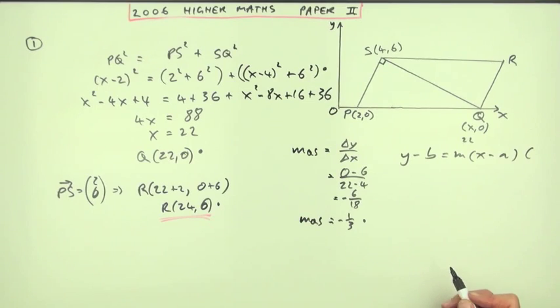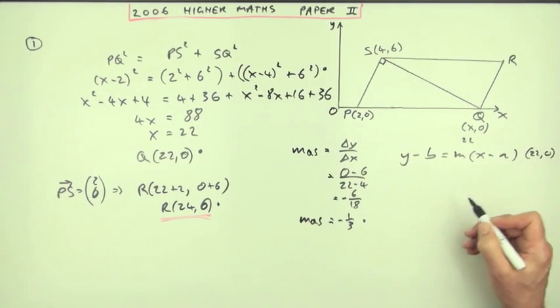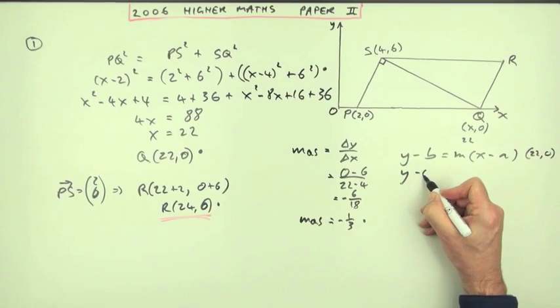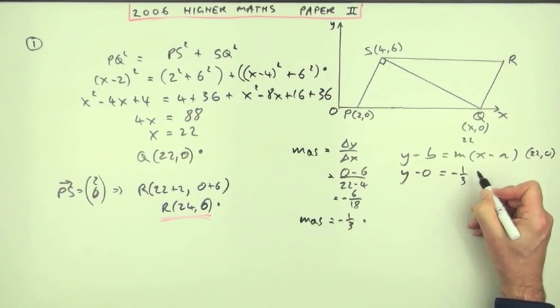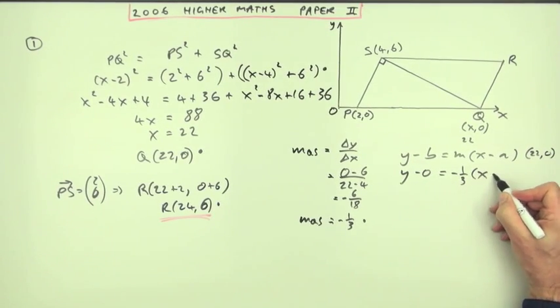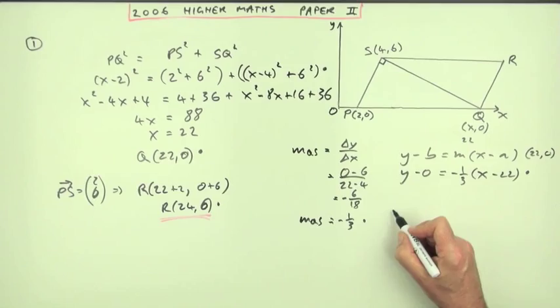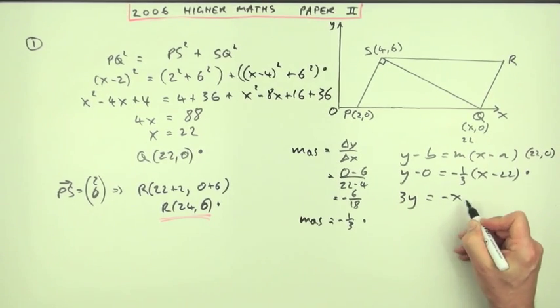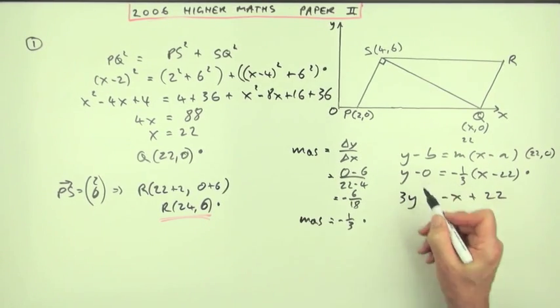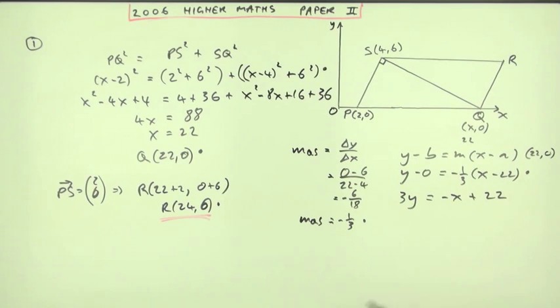Y minus 0 is negative 1 third of X minus 22. Take the 3 across and multiply it, that would be another mark. And then for the final mark, 3Y equals negative X plus 22, take the 3 across and multiply it, so it's just negative 1 times then. And move it across to the final answer.